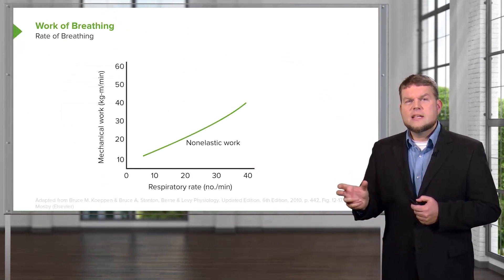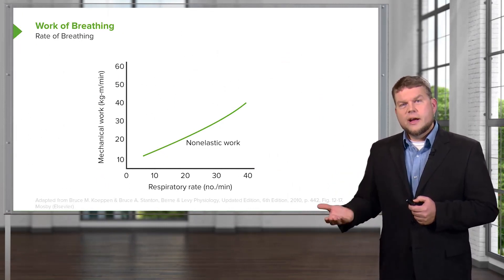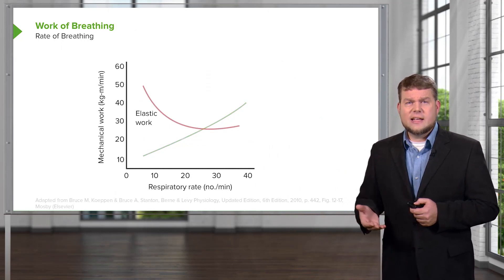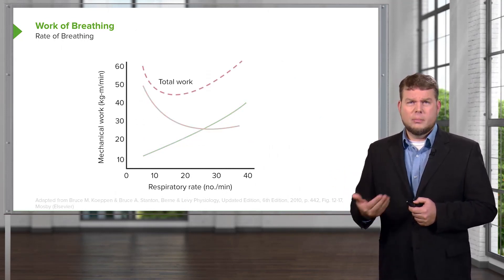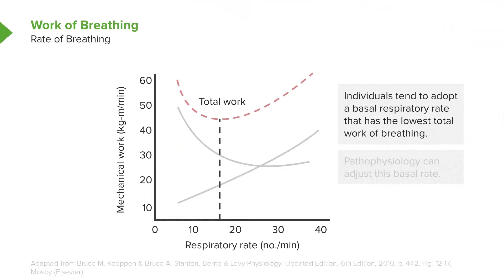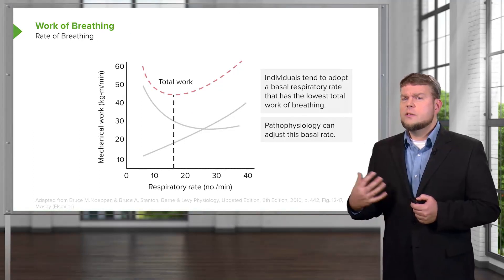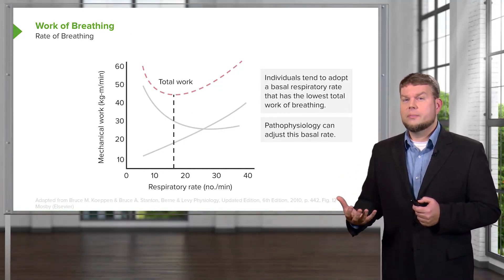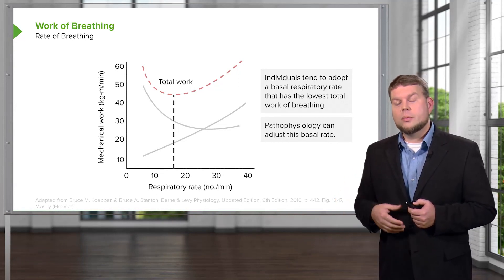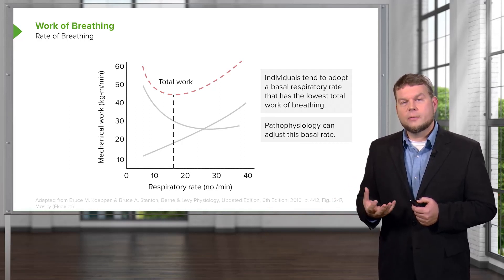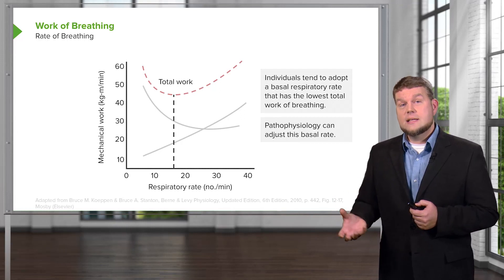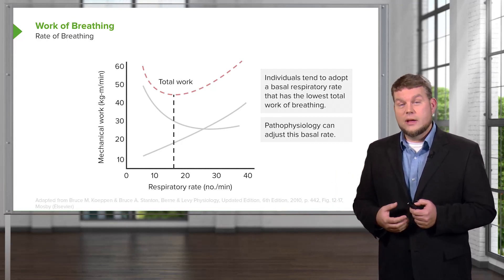Where work of breathing comes together with the rate of breathing is that we are trying to overcome both non-elastic and elastic work, and this creates a total work component. Most people's respiratory rate is at the area of the lowest amount of total work. In a pathophysiological state such as a restrictive lung disorder, it creates a lot of work. So if it's hard to inflate your lungs and takes a lot of effort, how do you avoid that? Maybe you just breathe more frequently. Someone with a restrictive lung disorder oftentimes has a very high respiratory rate simply because they're trying not to work as hard to totally inflate their lungs.